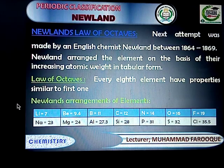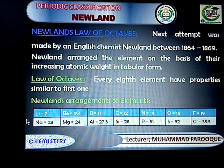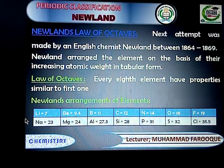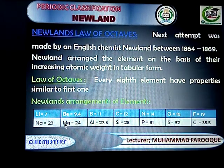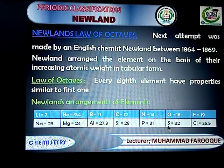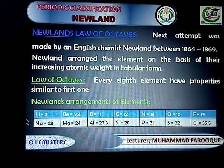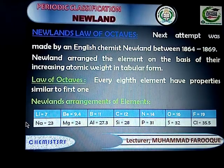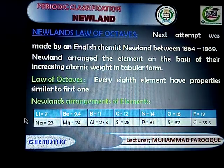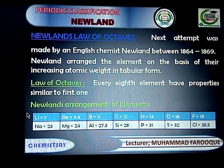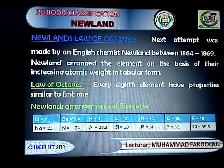Newlands arranged elements into seven groups. Two rows of his groups are shown on screen. His first row was: lithium, beryllium, boron, carbon, nitrogen, oxygen, and fluorine. The second row was: sodium, magnesium, aluminium, silicon, phosphorus, sulfur, and chlorine. We count elements from left to right in a row. If we start counting from beryllium, the eighth element will be magnesium, which has properties similar to beryllium. Similarly, if we start counting from carbon, the eighth element will be silicon, so silicon and carbon have the same properties.